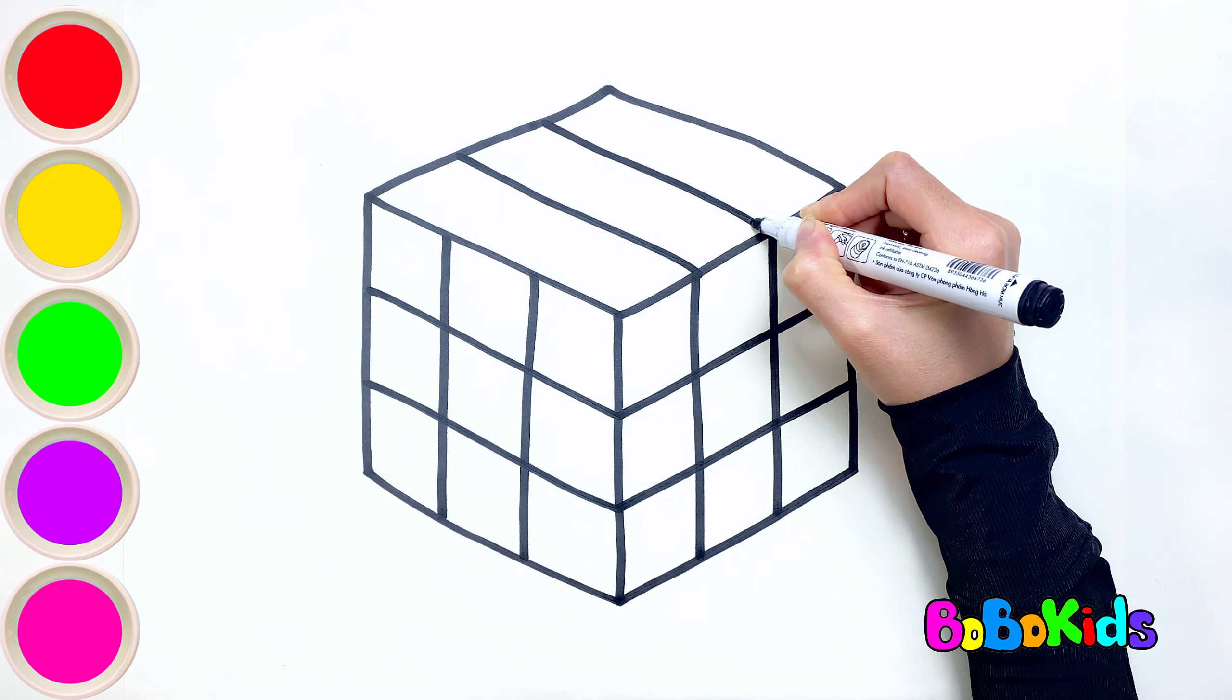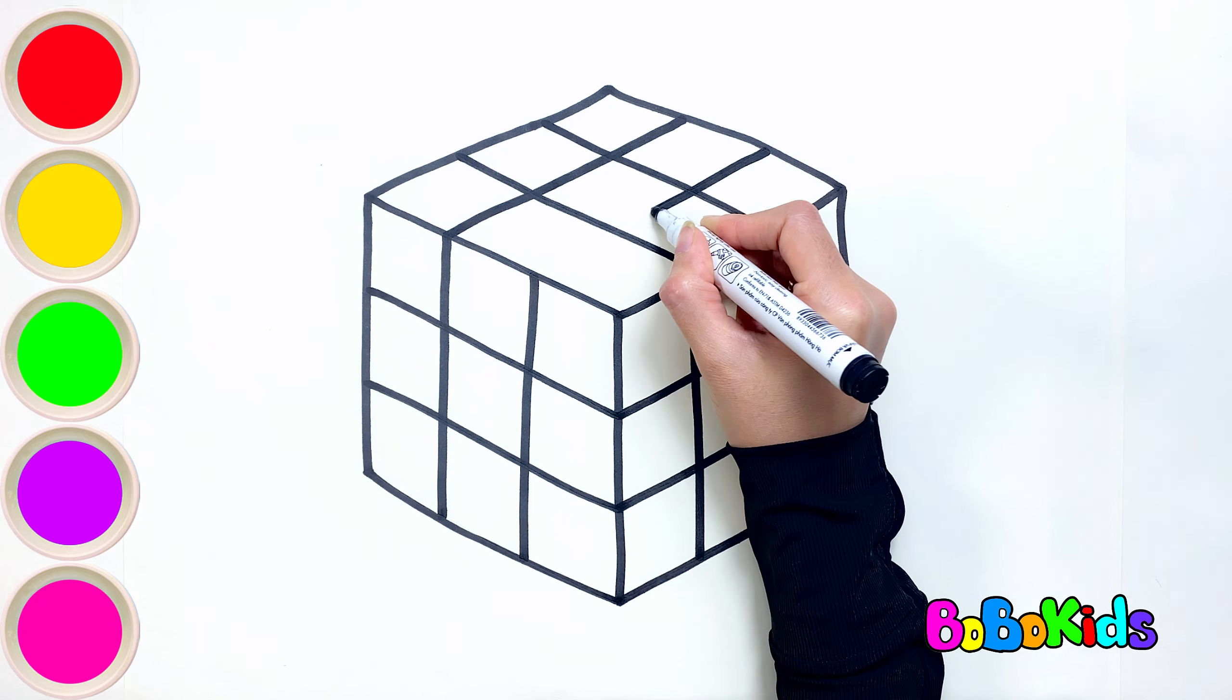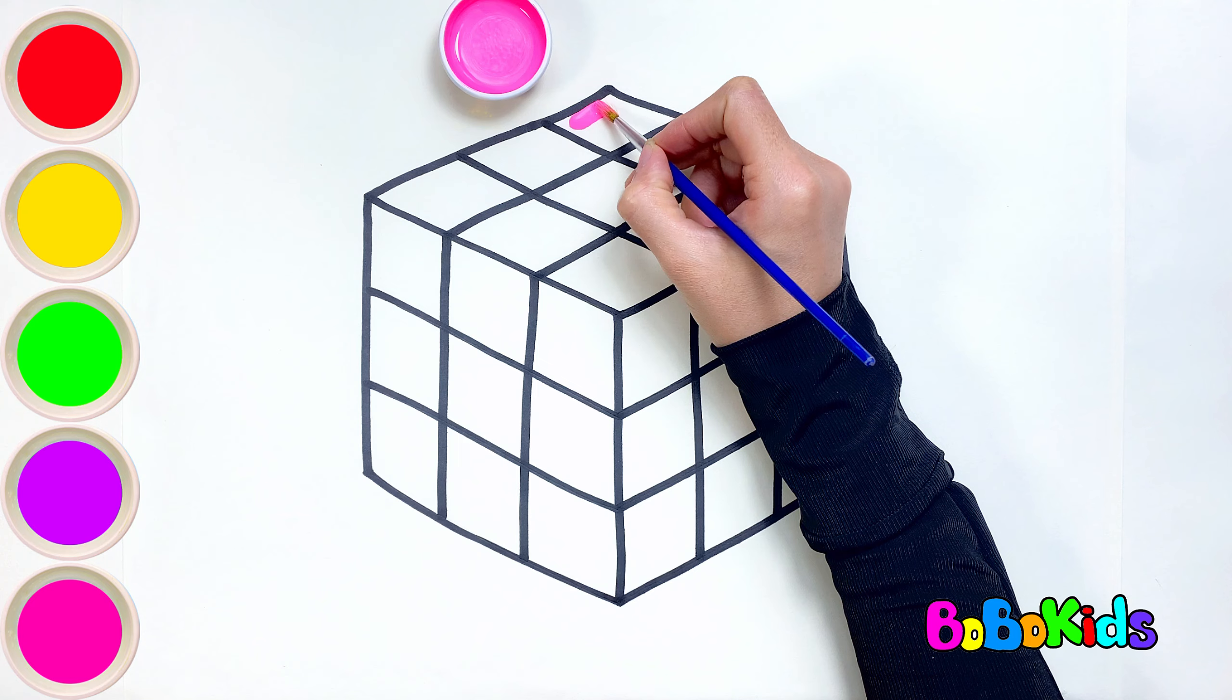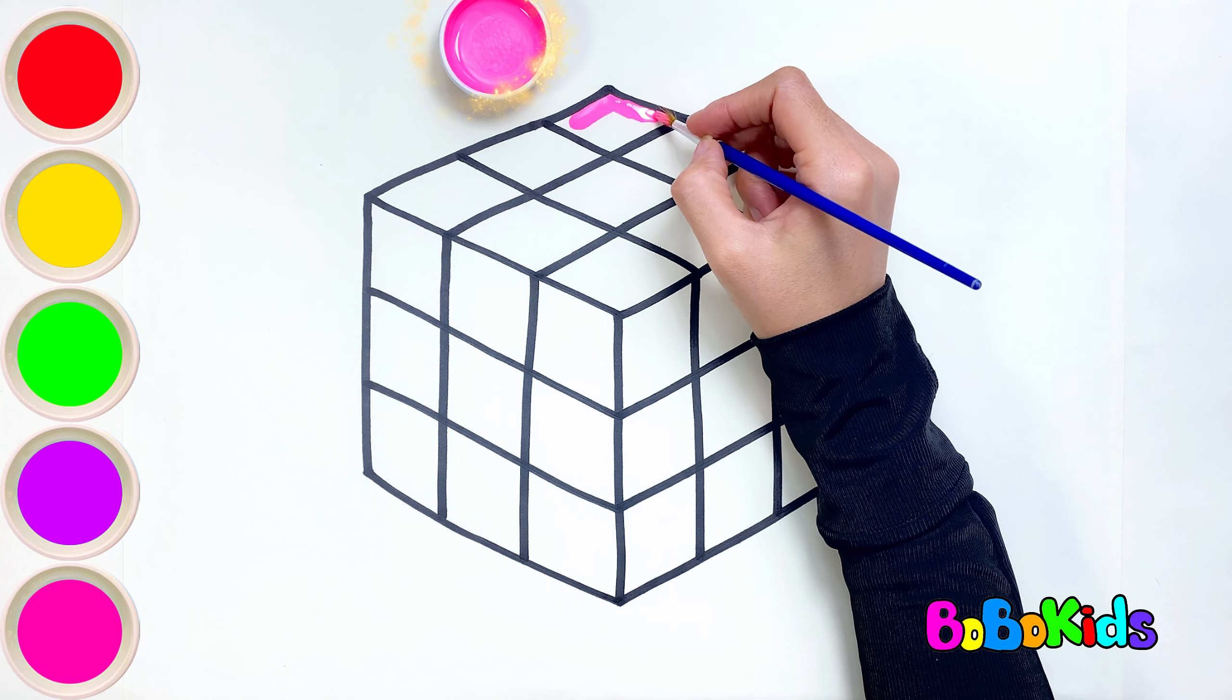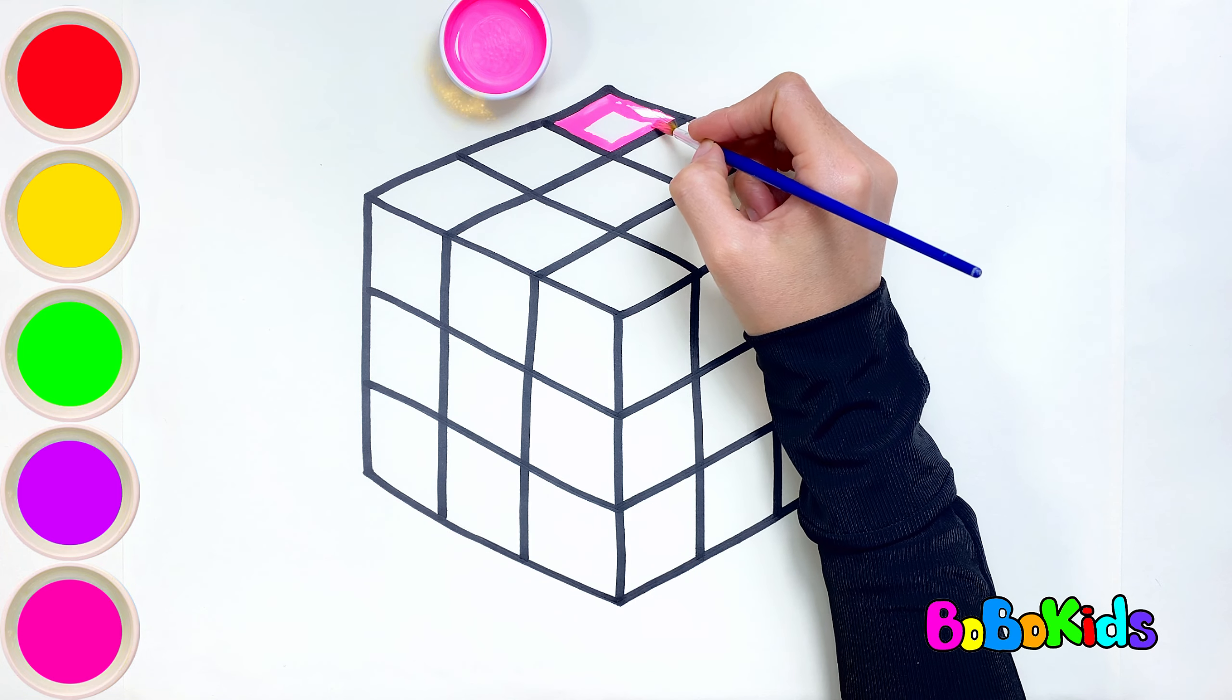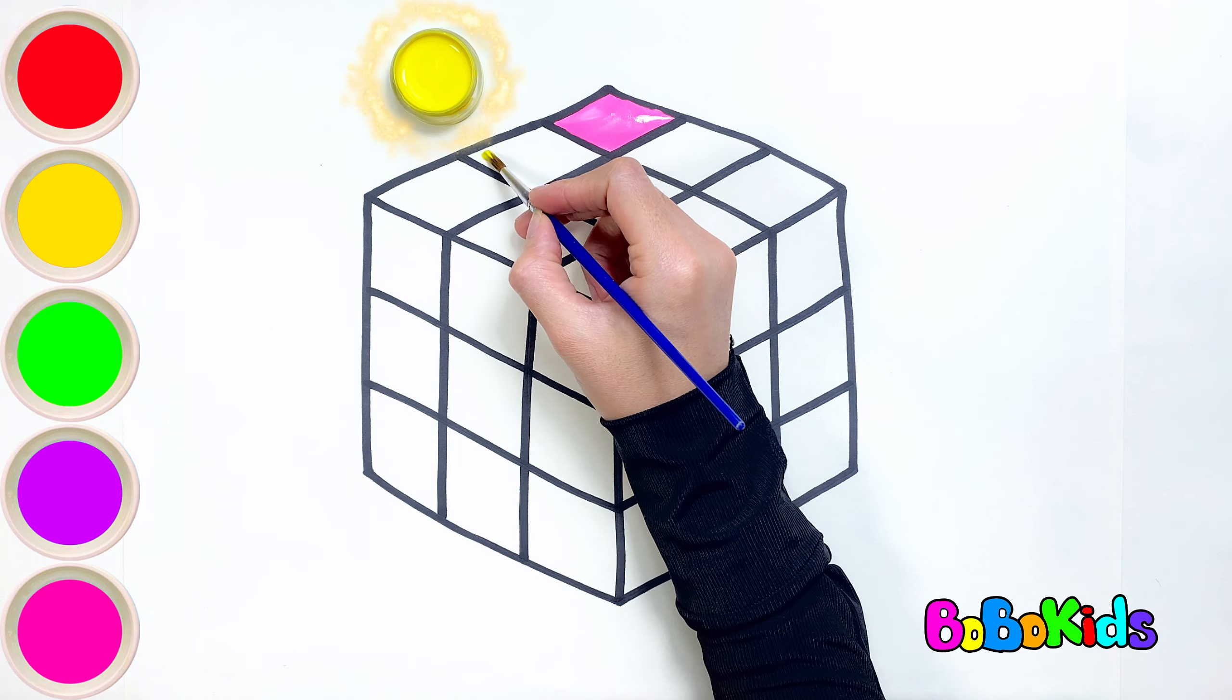A Rubik's Cube has many small squares inside, so let's choose a lot of colors to color it. Pink, Yellow.